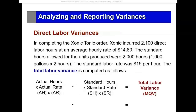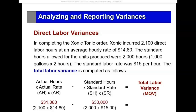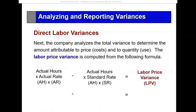The direct labor variance: they incurred 2,100 direct labor hours to produce those gallons, and the standard allowed was 2 hours a gallon — so 2,000 hours. The rate was $15.00 but we paid $14.80. Looking at the total variance: actual hours times actual rate minus standard hours times standard rate gives $1,080 unfavorable. So that is again a matter of price variance and quantity variance.